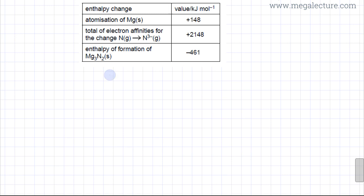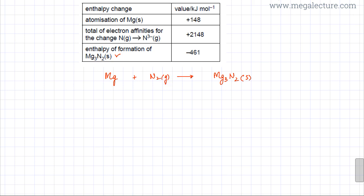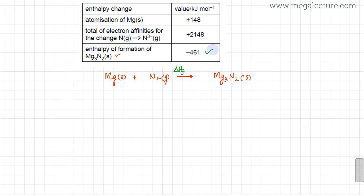I am going to start with the standard enthalpy of formation, which is when one mole of Mg₃N₂ solid is formed from its constituent elements — nitrogen in gaseous state and magnesium as a solid. This enthalpy change of formation is given as minus 461 kJ/mol.